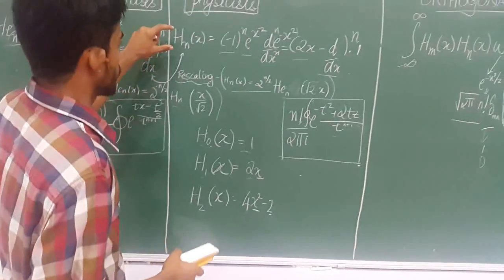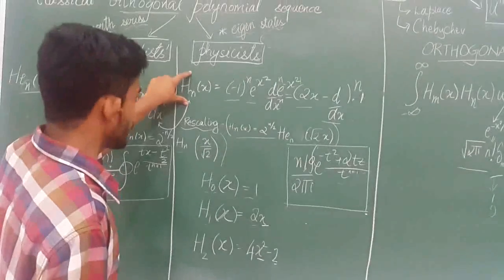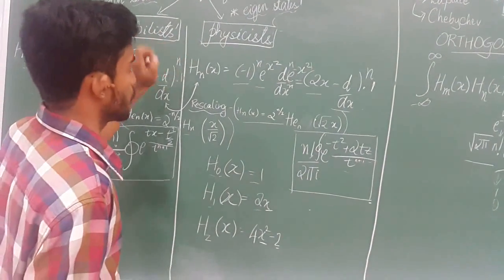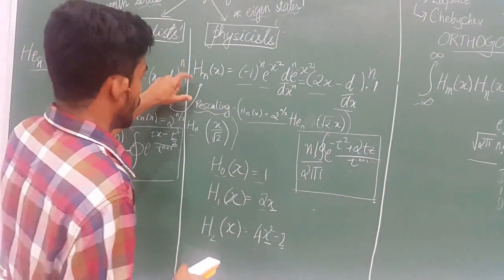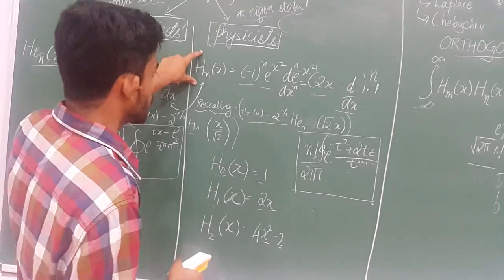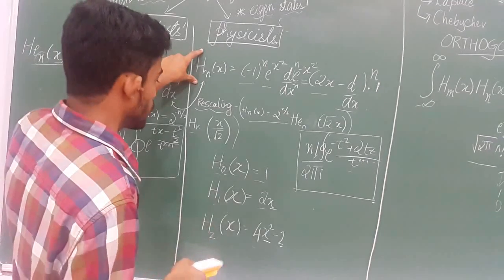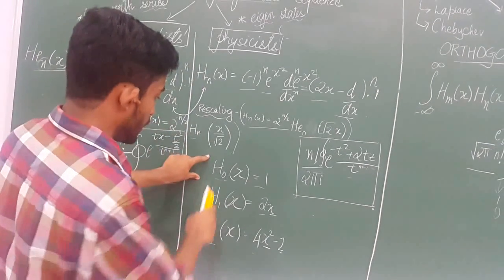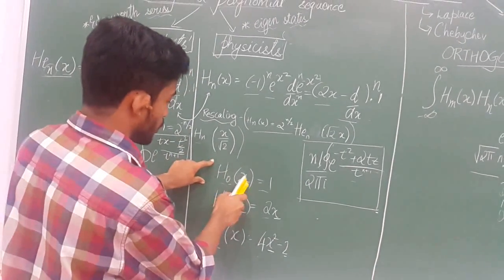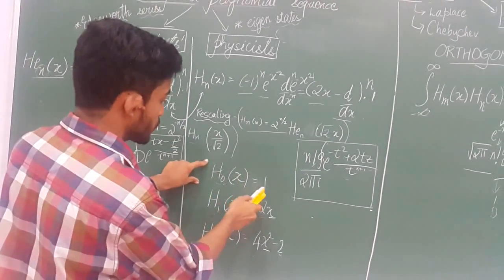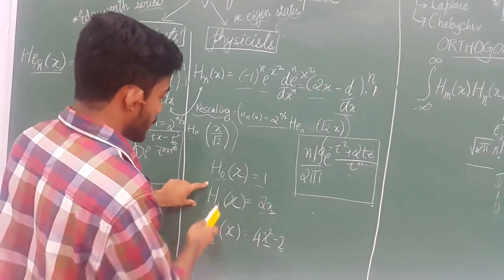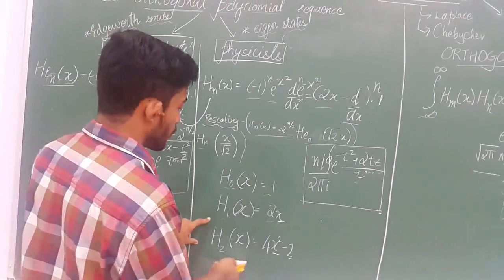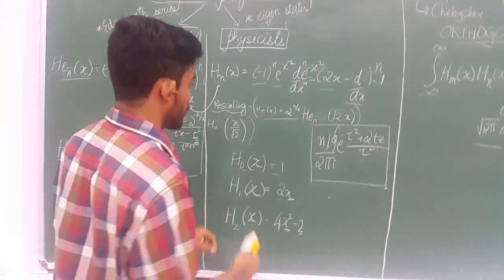Similarly, on solving the physicist Hermite polynomial equation with n = 0, n = 1, and n = 2, we get: H_0(x) = 1, H_1(x) = 2x, and H_2(x) = 4x² - 2.